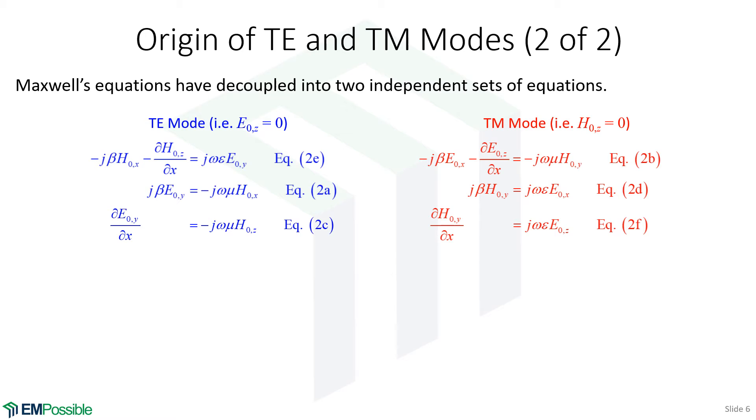So the TE and TM modes arise in slab waveguides because there's this uniform direction where nothing's changing. That allowed us to cross off one of the derivative terms, which caused some coupling, but that coupling is no longer there. Maxwell's equations have split into two independent modes.